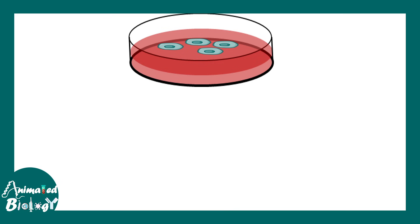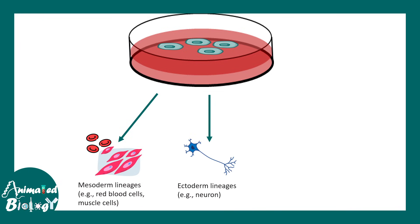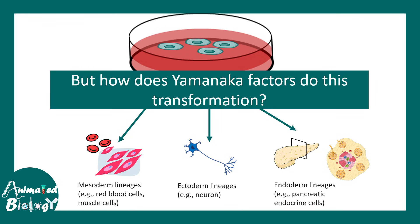Eventually, the cells got converted into induced pluripotent stem cells. These stem cells have the capability to generate mesoderm lineage derivatives such as blood and muscle, ectodermal lineage derivatives such as neurons, and endodermal lineage derivatives such as pancreatic endocrine cells. These iPSCs opened the door for enormous clinical applications.